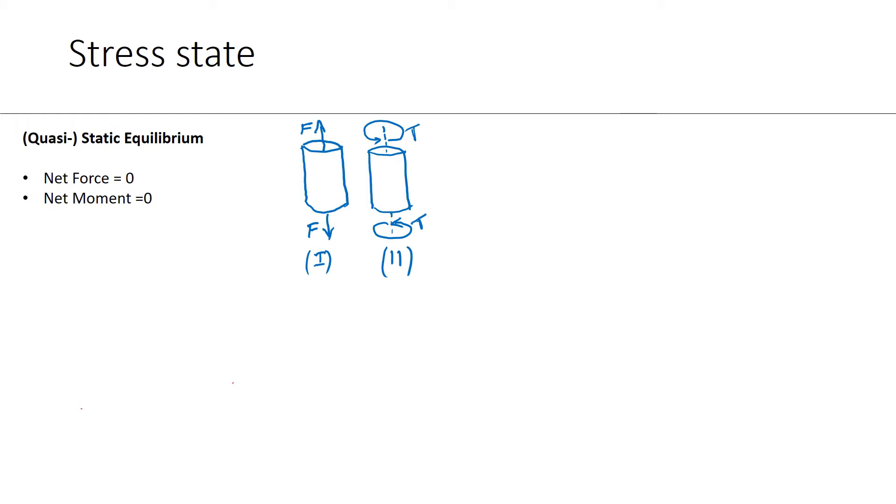It also implies one more important thing: any subpart will be in equilibrium. So if I take two subparts, both of different shapes, and isolate them along with the forces and moments, each of these subparts will be in equilibrium.